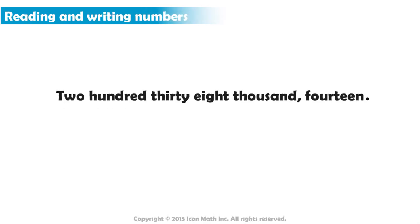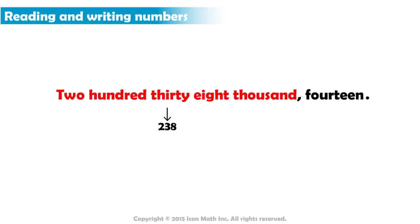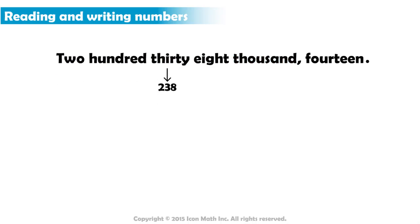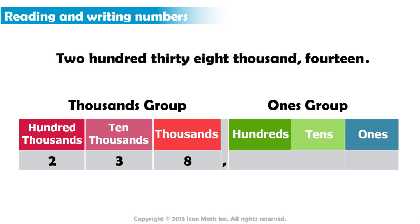Let us now read the following two numbers and write them in base ten numerals. For the first number, we read from left to right. We have 238,000, since we read the word 'thousand.' We know this number belongs in the thousands group. We write two in the hundred-thousands place, three in the ten-thousands place, and eight in the thousands place. We write a comma immediately to the right of the thousands digit to separate this group of three digits from the next.